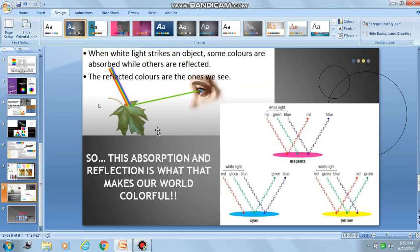I have also told you that white light is made up of 7 colors of wavelengths. So when white light strikes an object, some colors are absorbed while others are reflected.